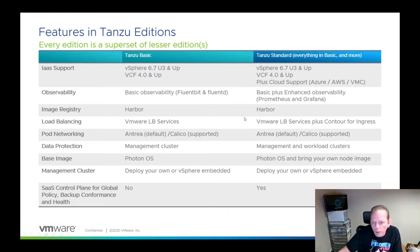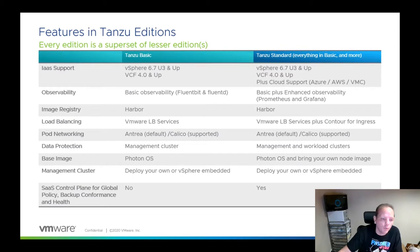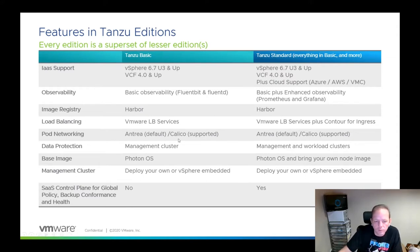For load balancing, both Tanzu Basic and Standard include a basic load balancing service, but Standard adds support for ingress. Ingress is a really critical feature for production Kubernetes deployments — it doesn't matter specifically whether you use Contour unless you need a Contour-specific feature, but you absolutely need an ingress solution at any scale and it's ideal to have it supported within the overall solution.